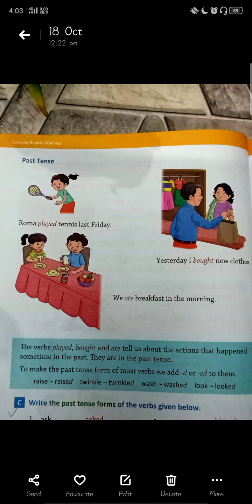In the blue strip it is clearly written: the verbs played, bought, and ate tell us about the actions that happened sometime in the past — they are in the past tense. These verbs tell us that something happened in the past.